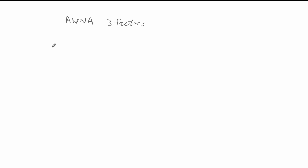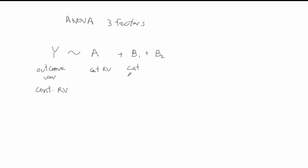The Latin square design is a special case of an ANOVA model with three factors. You have an outcome variable y that is a continuous random variable, and you regress y on three factors: one factor A, which is a categorical random variable, and then two blocking variables b1 and b2, which are also categorical random variables. You want to know how membership in a treatment group affects the outcome variable y.